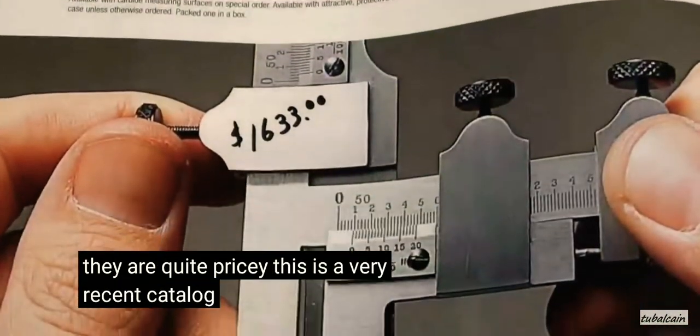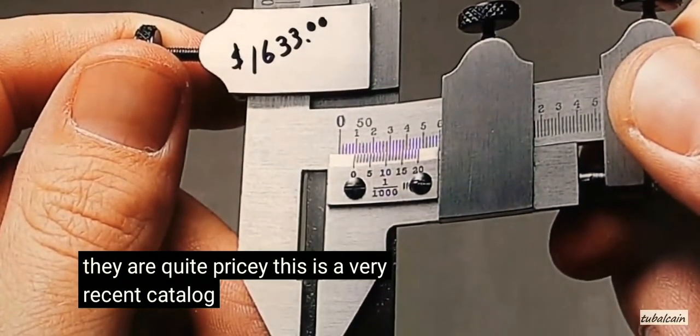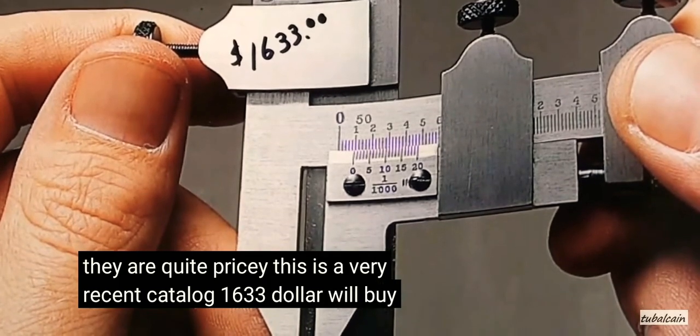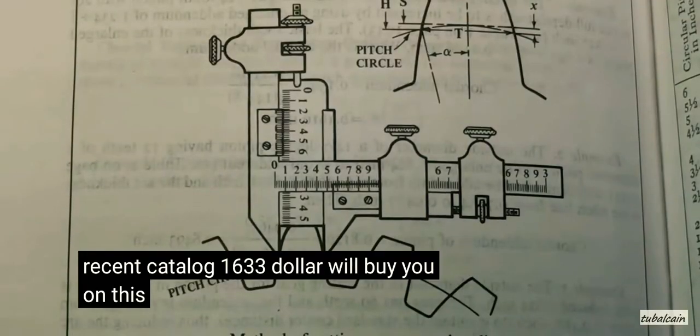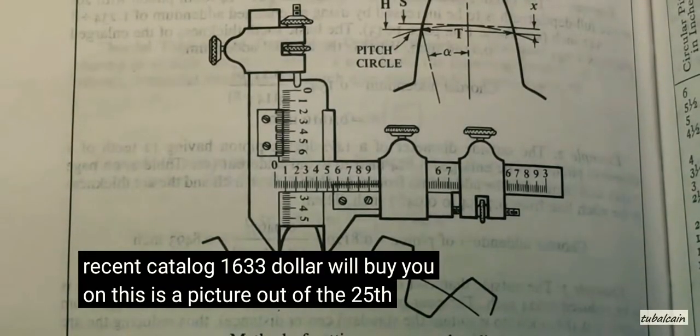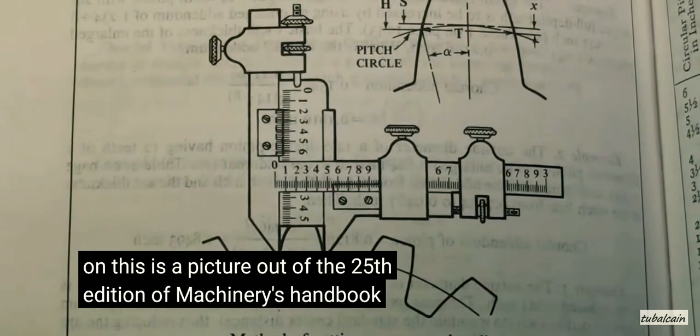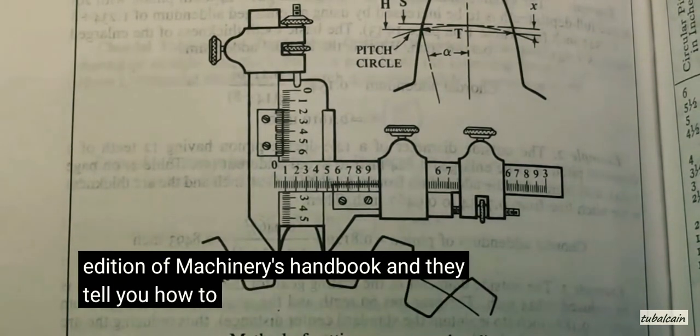See, this is a very recent catalog. $1,633 will buy you one. This is a picture out of the 25th edition of Machinery's Handbook, and they tell you how to use the instrument.